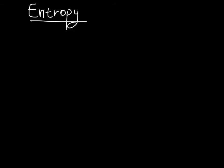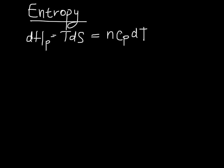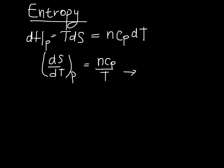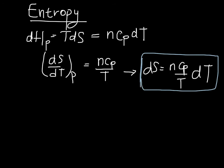Now let's see how heat capacity allows us to find changes in entropy. At constant pressure, dH = T·dS = n·Cp·dT. Rearranging, dS/dT at constant pressure equals n·Cp/T, or dS = n·Cp/T · dT.